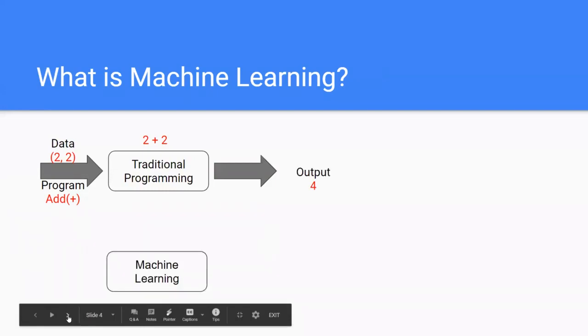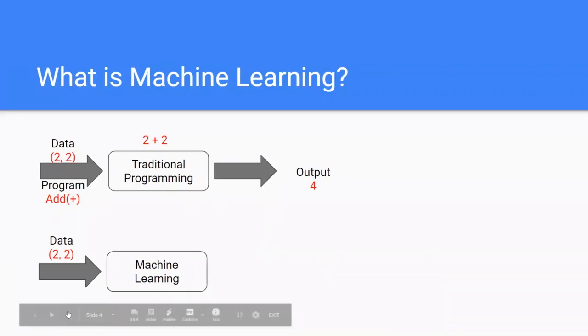So what happens in machine learning now is that we are going to give the data as it is, that is 2, 2, that is the data set, those two digits and now we'll actually give it the output. So output 4. So basically what I'm doing here is I'm telling the machine that you need to come up with a program that will give me the output 4 given these two digits 2, 2. So it will actually come up with its own operation.